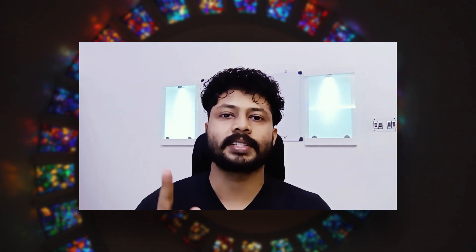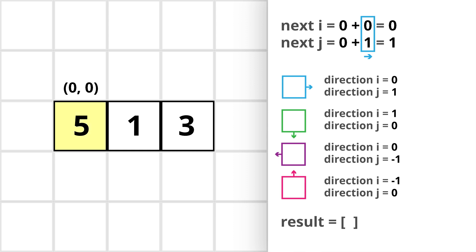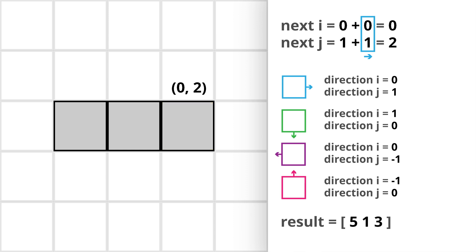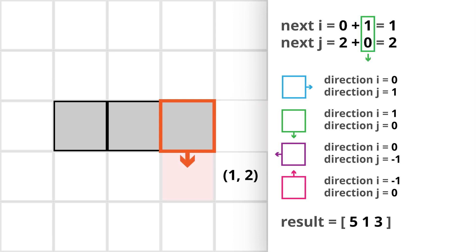Now let's take one more example. Here, after reaching cell 3, we cannot move forward because the next cell is out of the matrix. We take a right turn, but even after taking that right turn, the next cell is out of the matrix. Therefore we can stop here, and this is the final result.